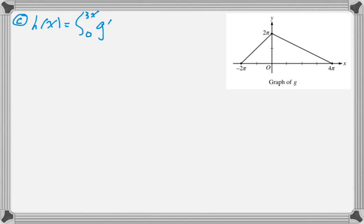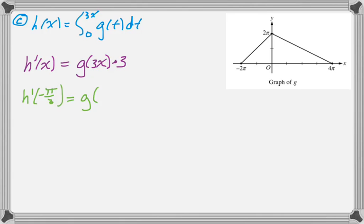So for part C, we're given this accumulation function, and we're asked to find its derivative. So this is the second fundamental theorem of calculus. So h prime of x is going to be g evaluated at that upper bound, so g of 3x times the derivative of the upper bound, so times 3. So to find h prime of negative π over 3, all I have to do is substitute in negative π over 3. So 3 times negative π over 3 is negative π, and then times 3.